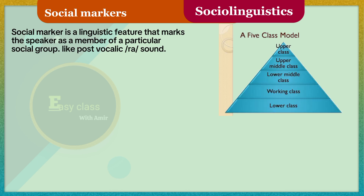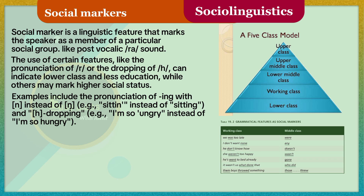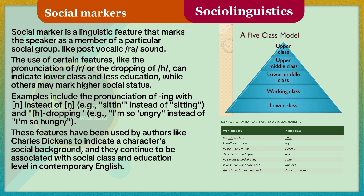A social marker is a linguistic feature that marks the speaker as a member of a particular social group, like the post-vocalic R sound. The use of certain features, like the pronunciation of R or the dropping of H, can indicate lower class and less education, while others may mark higher social status. Examples include the pronunciation of '-ing' as '-in'' (for example, 'sittin'' instead of 'sitting'), and H-dropping (for example, 'I'm so 'ungri' instead of 'I'm so hungry'). These features have been used by authors like Charles Dickens to indicate a character's social background, and they continue to be associated with social class and education level in contemporary English.